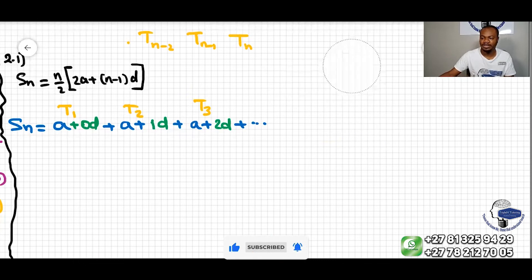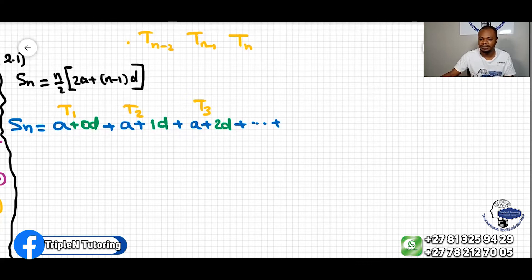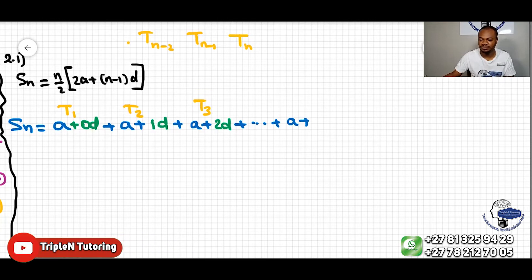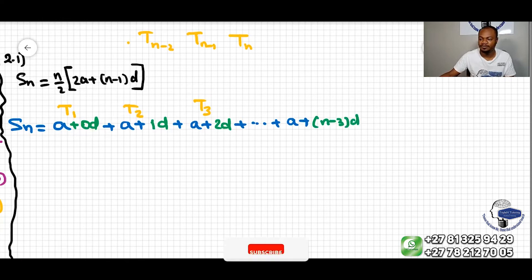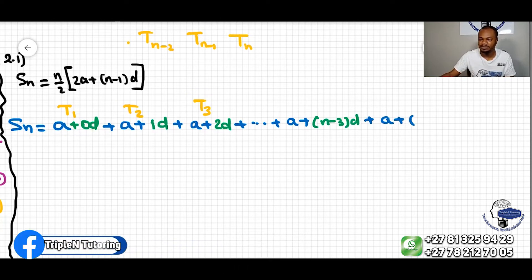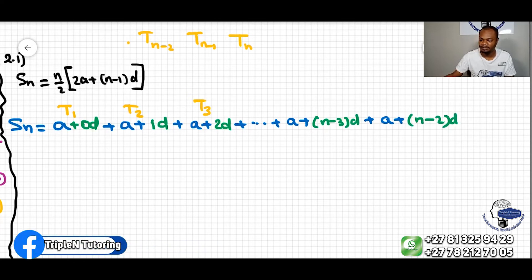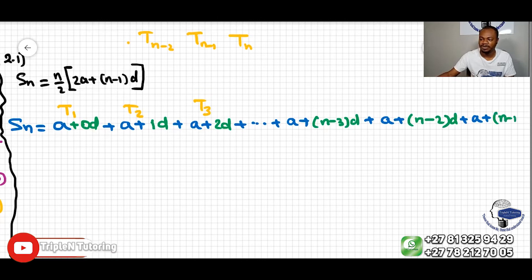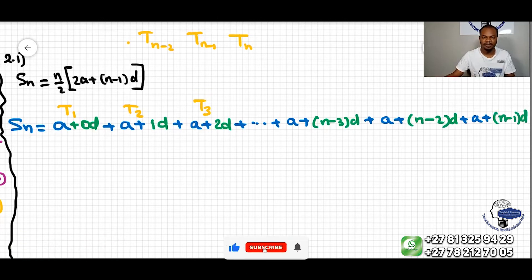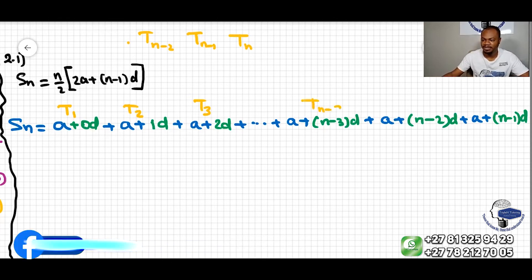Continuing: tn minus 2 equals a plus n minus 3 times d. Then tn minus 1 equals a plus n minus 2 times d. And the last term tn equals a plus n minus 1 times d.